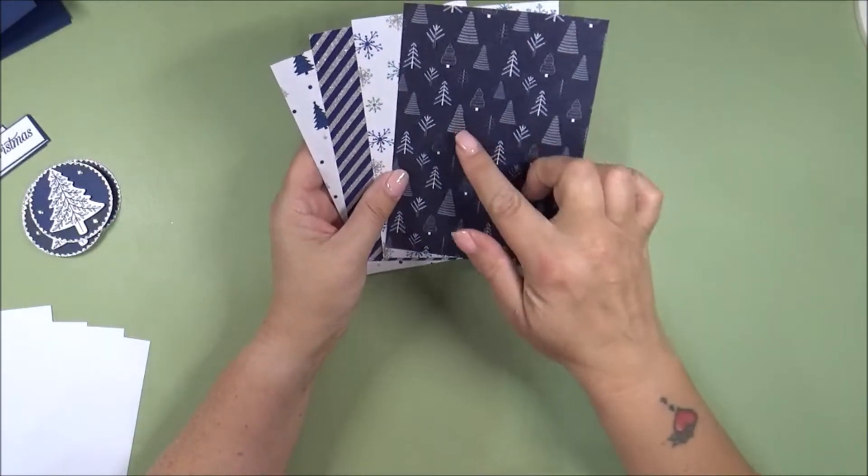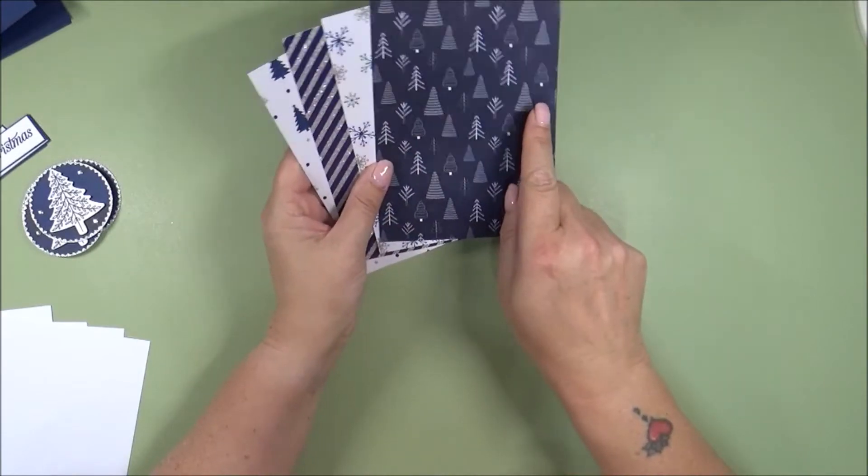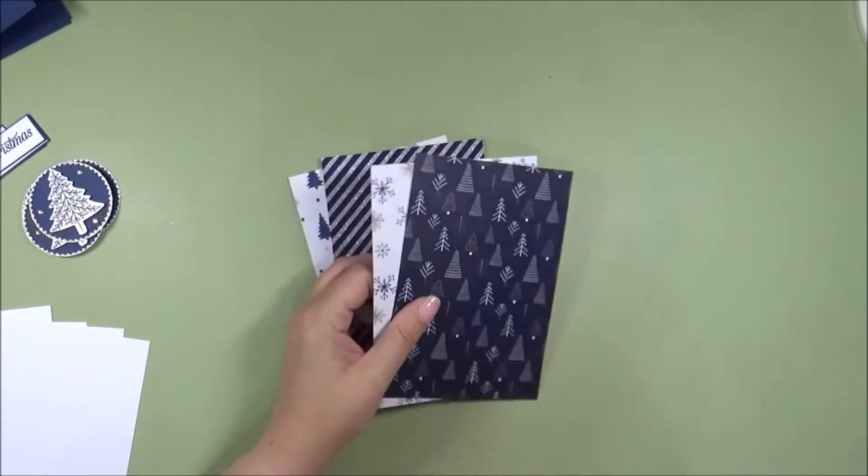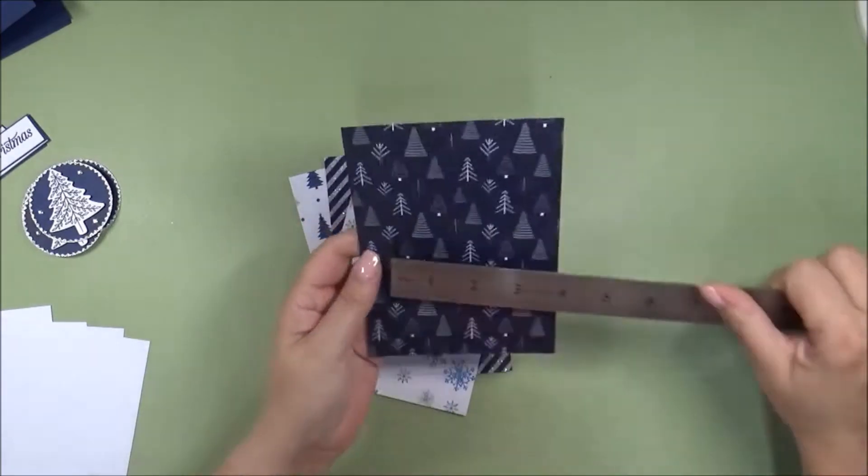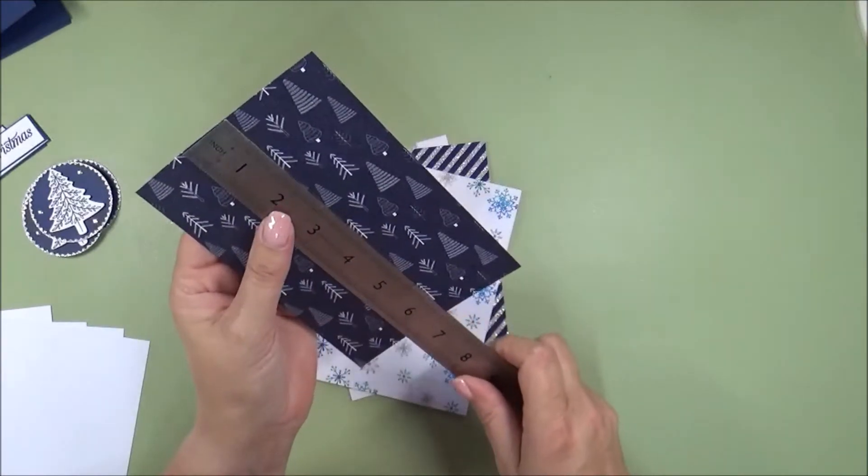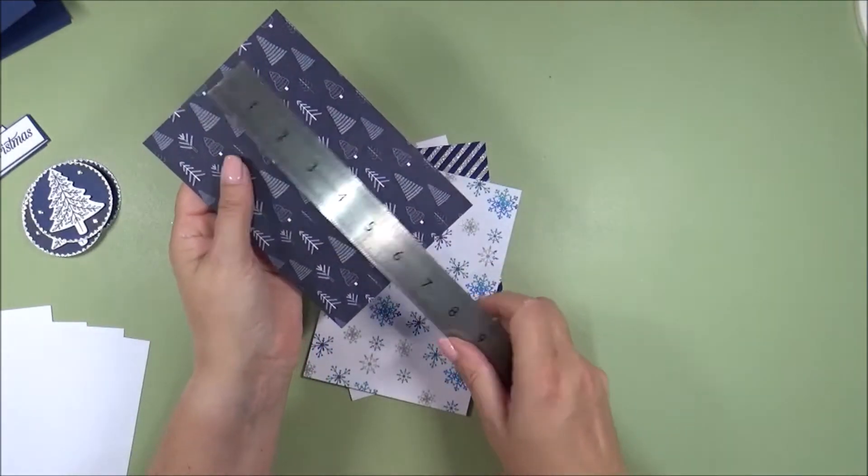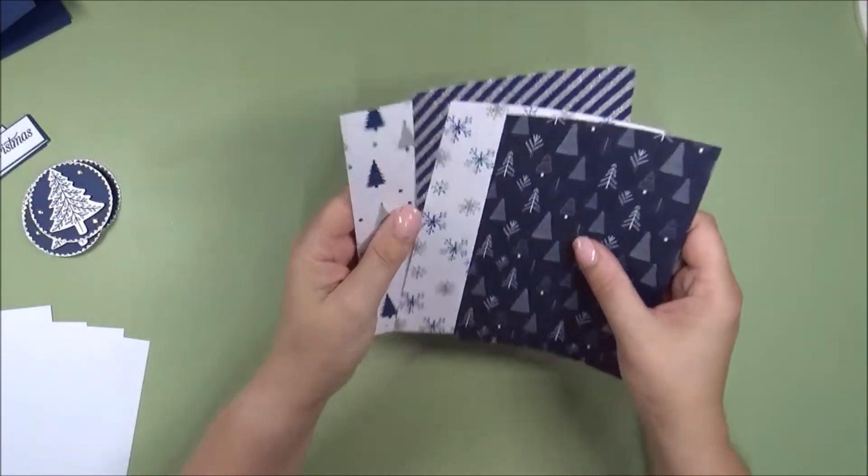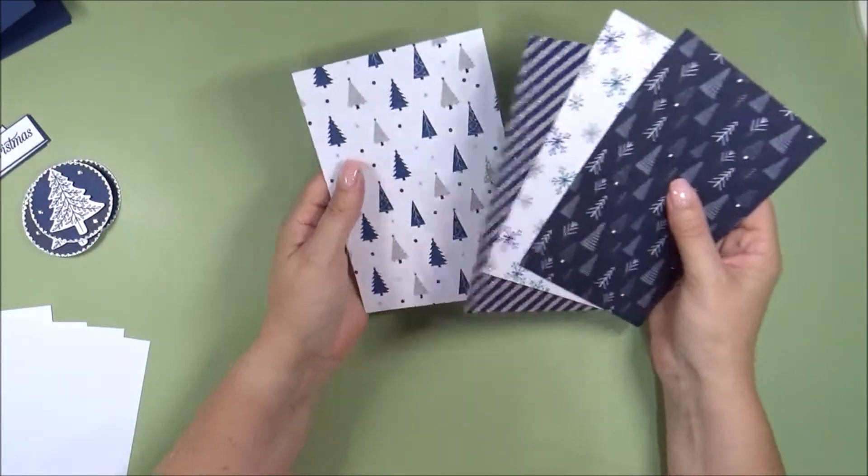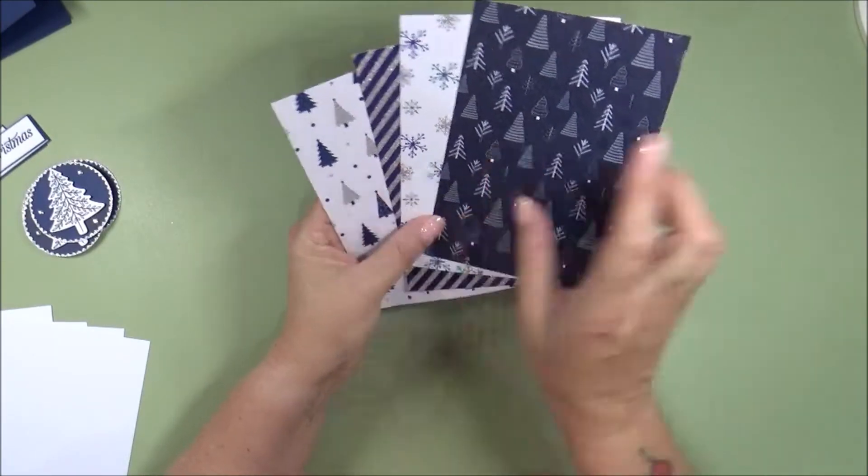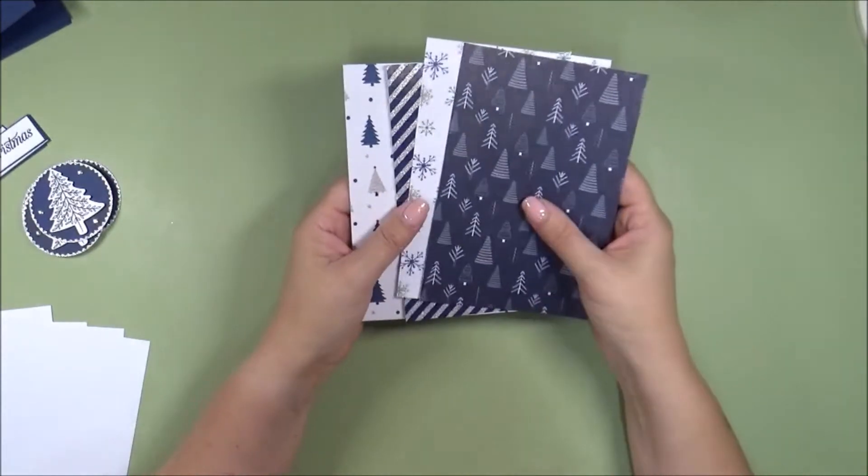And these measure 4 1⁄2 inches by 6 1⁄2 inches. Let me just double check that so I'm not giving you the wrong measurements. Yeah, 4 1⁄2 inches by 6 1⁄2 inches. And what you want to do is when you cut your patterned paper, just check that if there's any orientation, like mine with my trees, just check that you've got them up the right way.